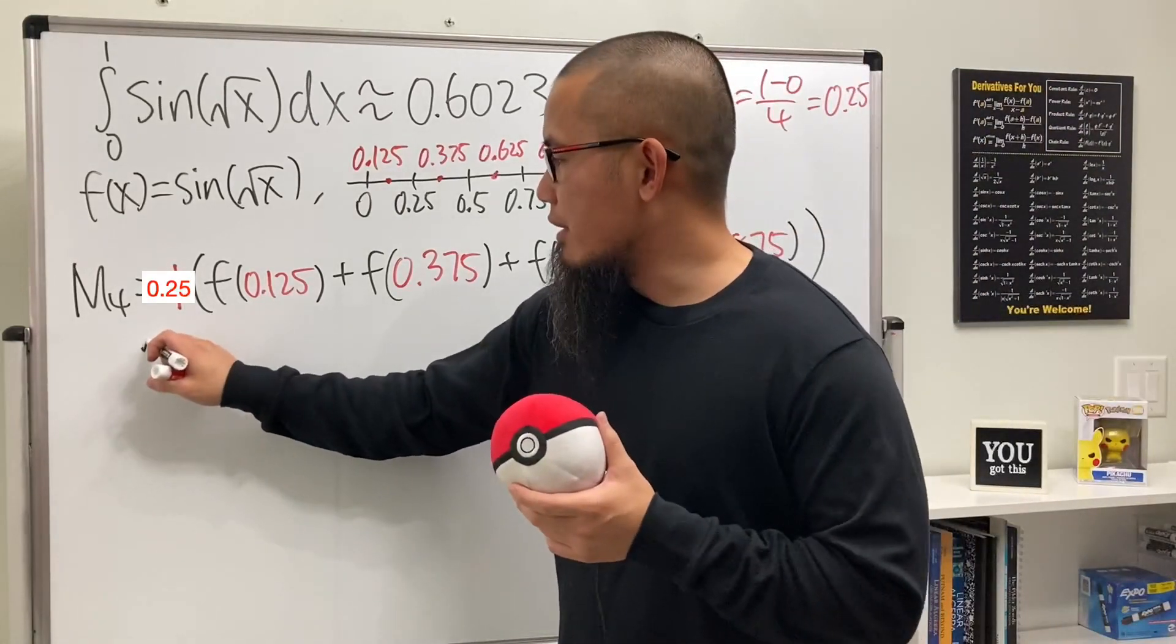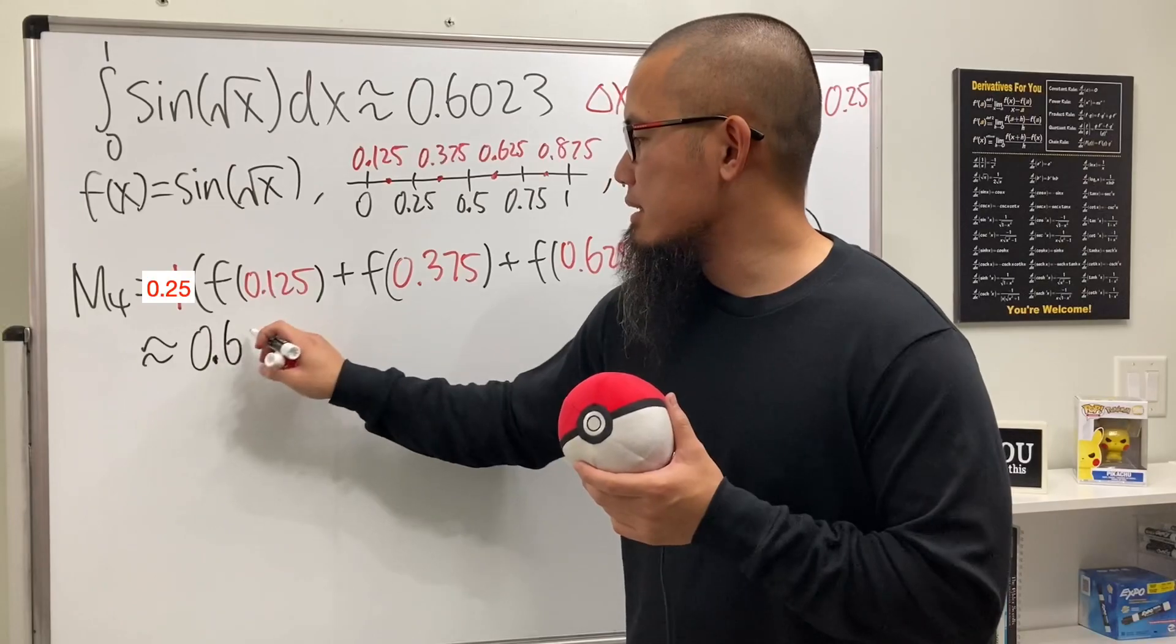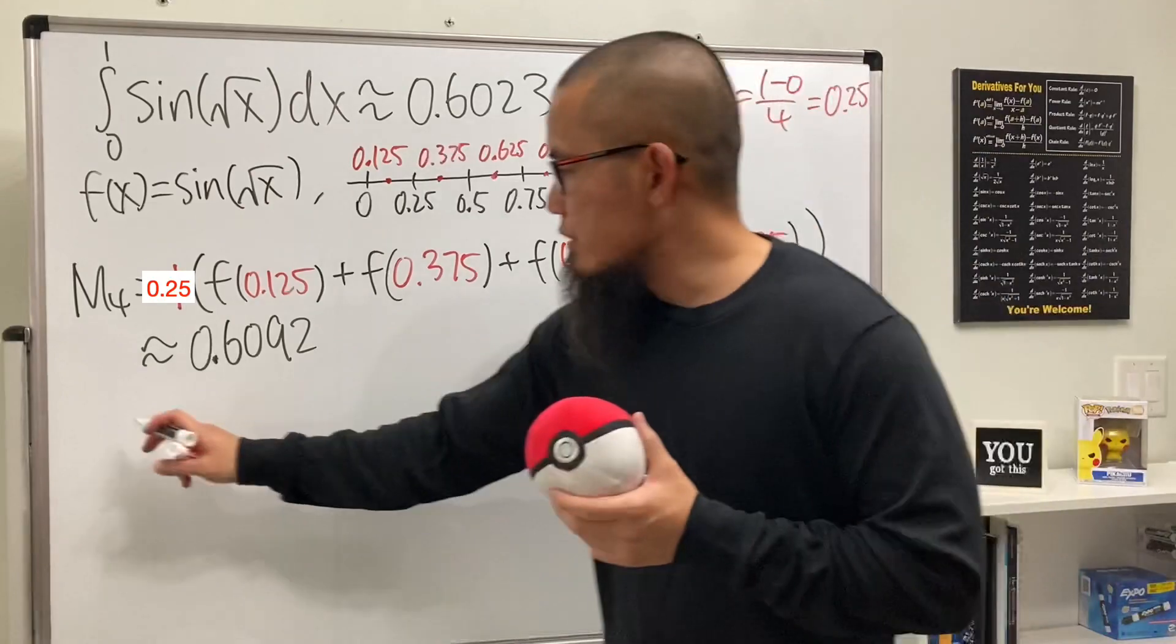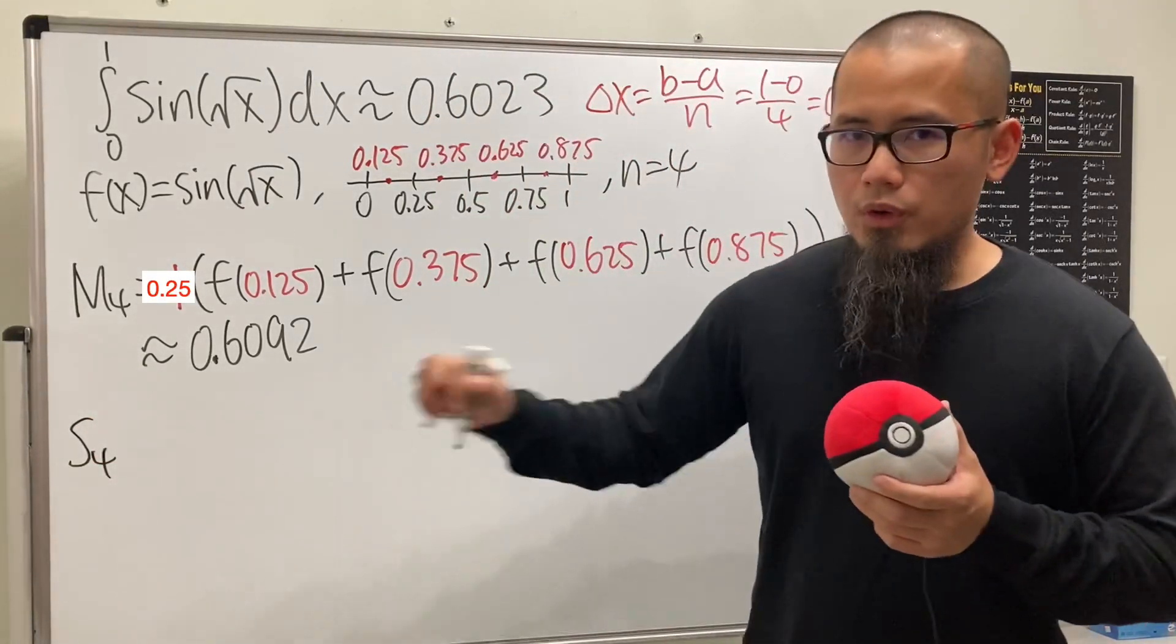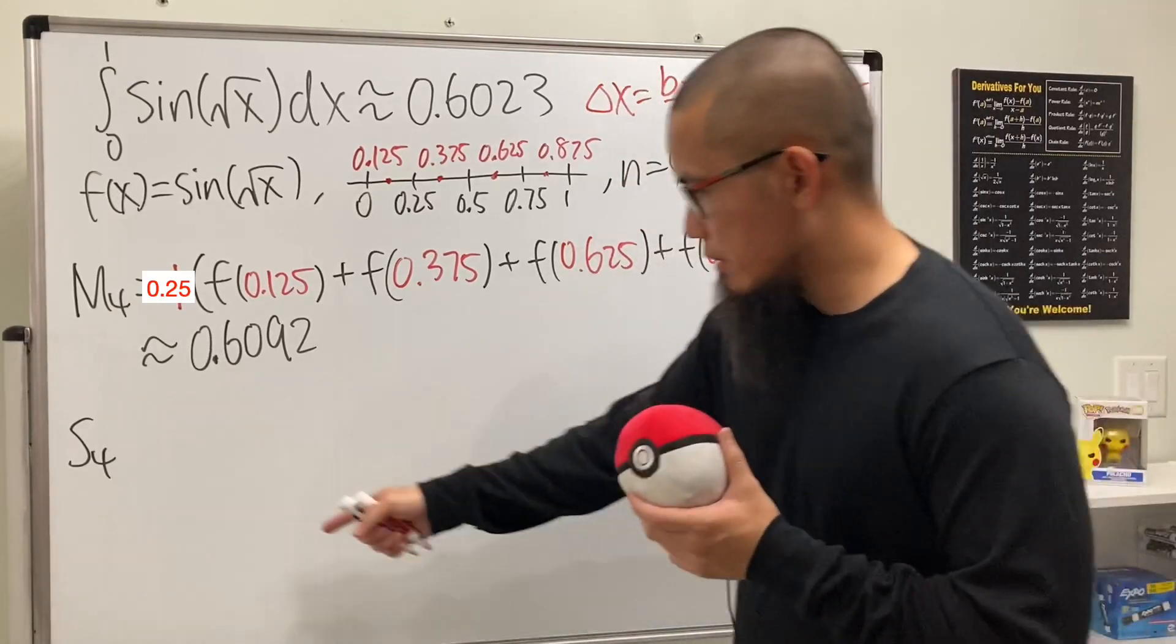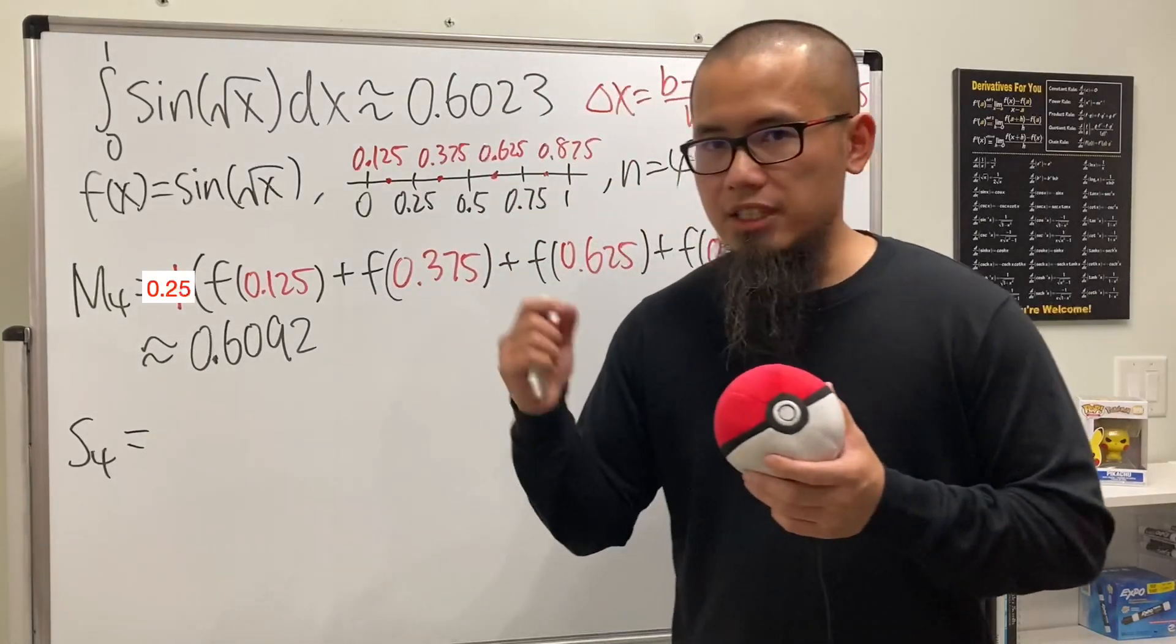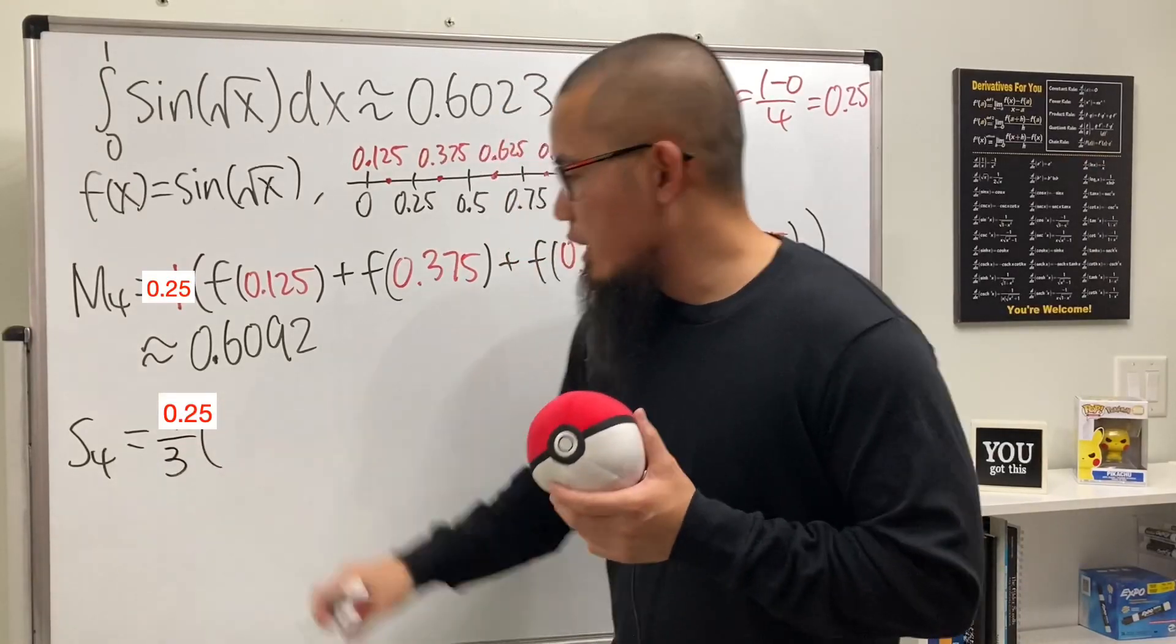If we use a calculator, we get approximately 0.6092. Now let's look at Simpson's rule. Remember, when we use Simpson's rule, n has to be an even number. For Simpson's rule, we have delta x divided by 3. Then here we go, we'll be using these for the input.